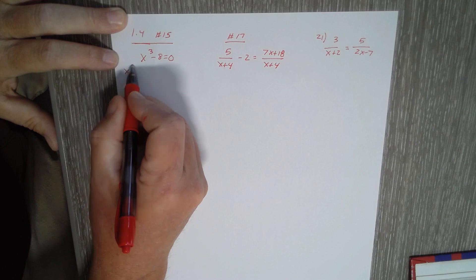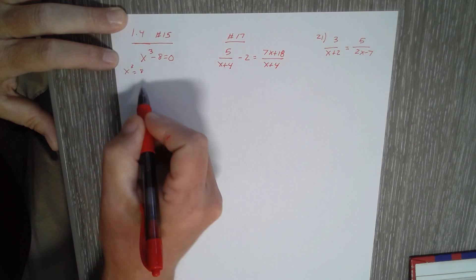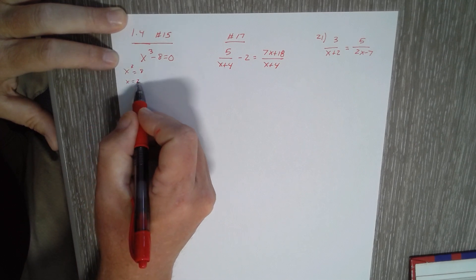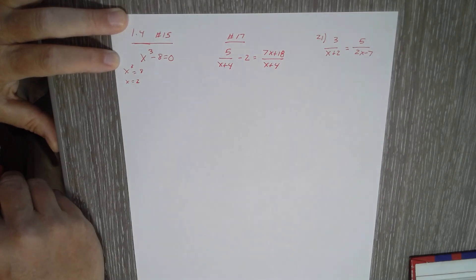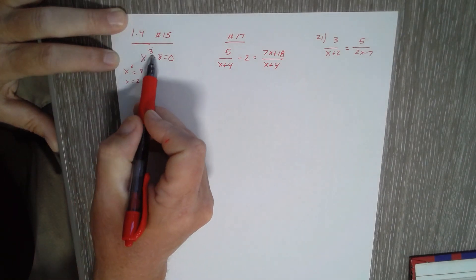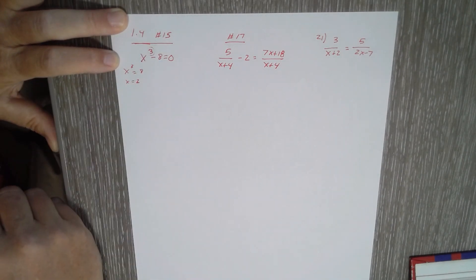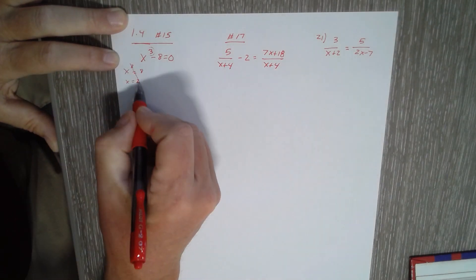is they move the 8 over and take the cube root and just get 2. The problem is we know there have to be three solutions and we only have one, so something else has to be done.